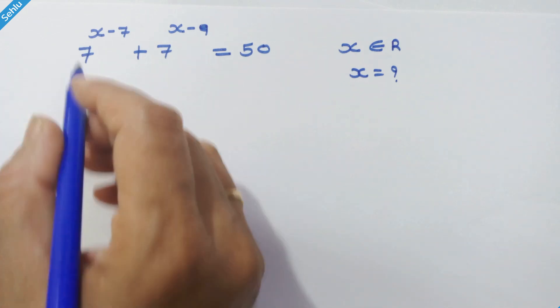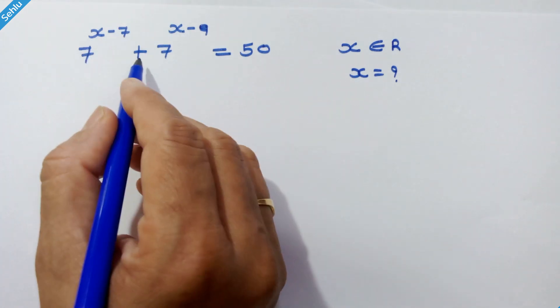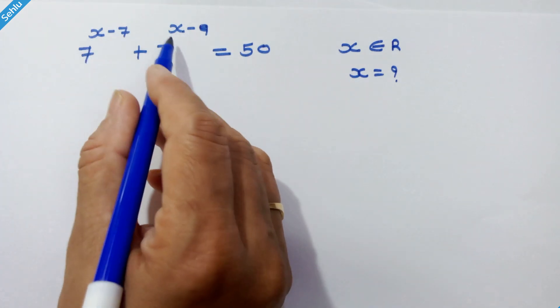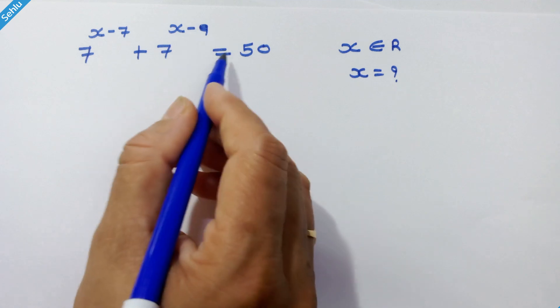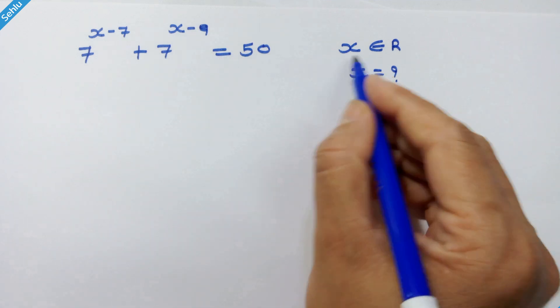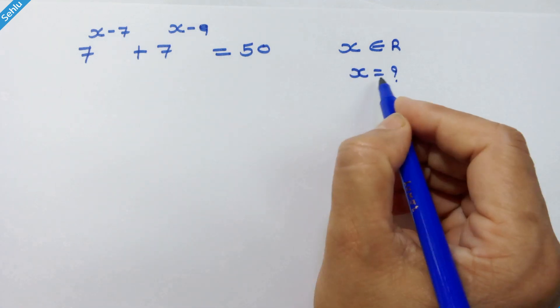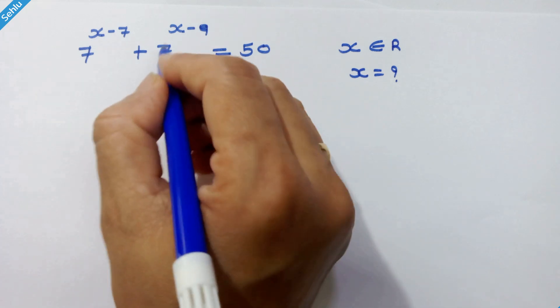Hello friends, here we have 7 raised to x minus 7 plus 7 raised to x minus 9 is equal to 50, where x is a real number, and let's solve for x.